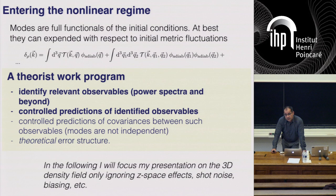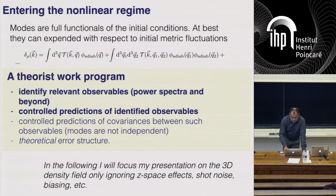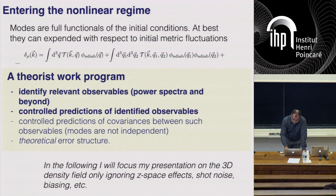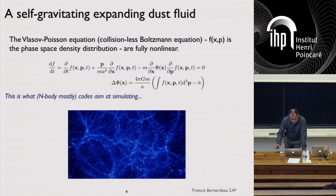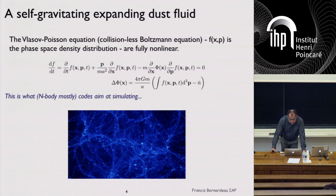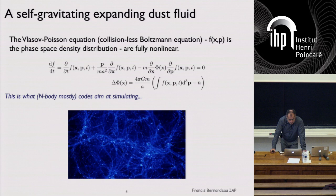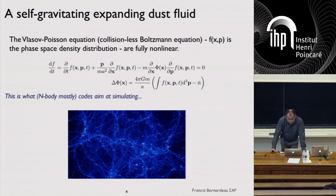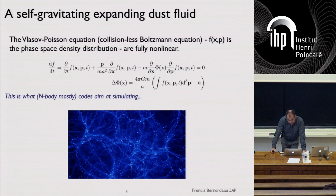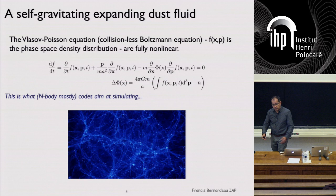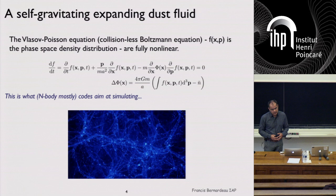There is a transfer function depending on the complexity of your nonlinear evolution. In linear evolution you may have a complex structure in terms of mode couplings, but if it's the same 3D or 4D mode you expect a delta function, and at higher order mode coupling you expect something more complicated. The theory work program is to identify relevant observables — by default power spectra, but not necessarily — and to build controlled predictions, meaning not only the expected value but the full distribution function of these observables.